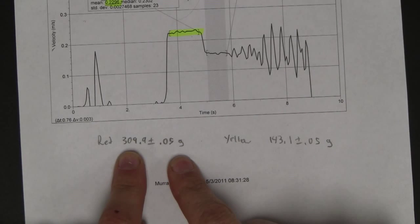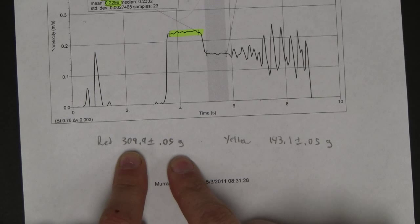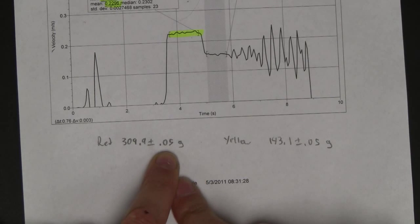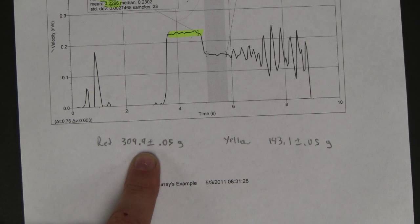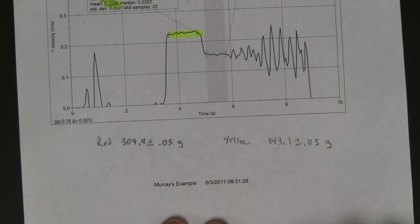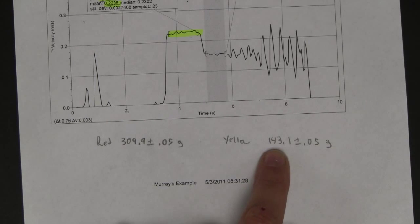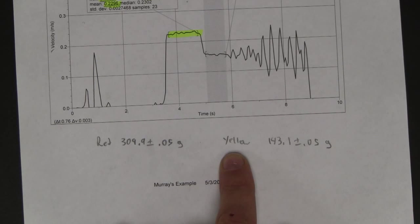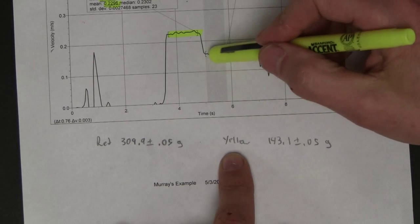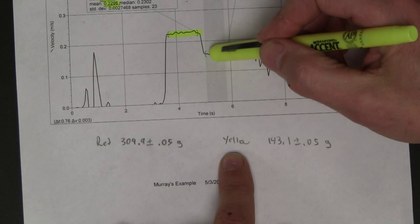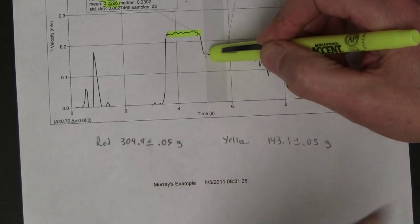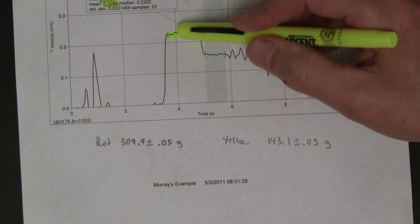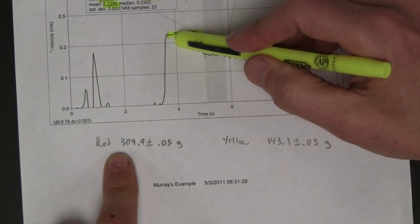And the mass of the red one, when I did it, was 309.9. And that's plus or minus half the smallest digit. So since we have tenths, I'm going to say half is 0.05 because it is. And 143.1 was the mass of the yellow card. So here, the red and yellow were together. So I'll add those masses. And the uncertainty, by the way, is we're going to add that too. But before, it was just the red one. The red one was moving.